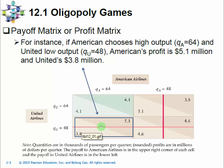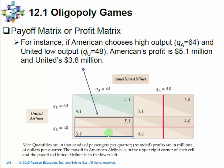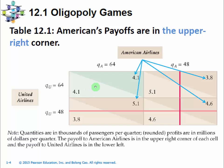Let's look at the lower left cell for example. In this cell, United is playing the low output strategy and American Airlines is playing the high output strategy. So what we are listing here is the outcome in terms of profit or payoffs. If American is playing the high output and United is playing the low output strategy, United gets 3.8 and American Airlines gets 5.1. These different strategies from the different players pinpoint a cell in the payoff matrix, and that cell lists the payoffs to the two players. There are different traditions to place the payoffs in the payoff cells — they can be listed side by side, on the left for the row player and on the right for the column player.